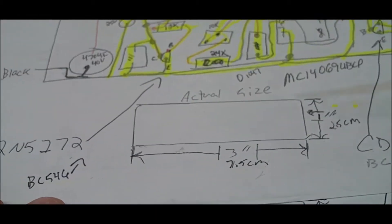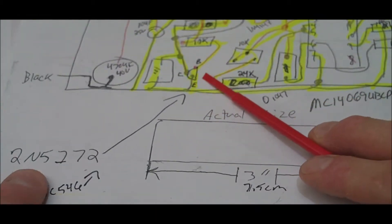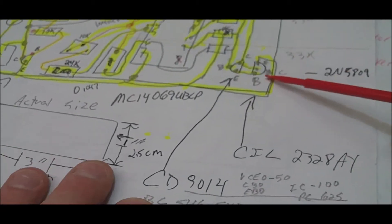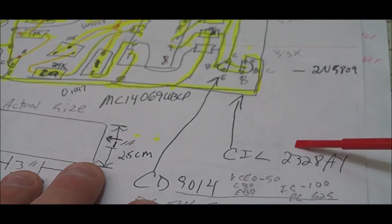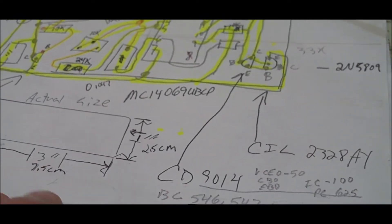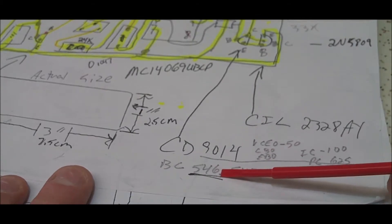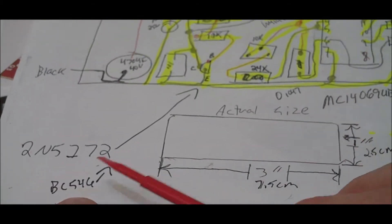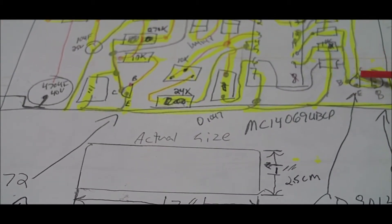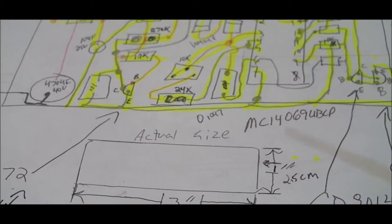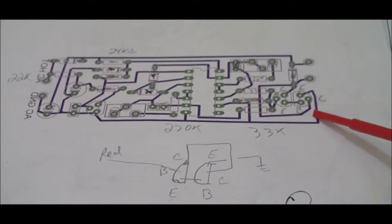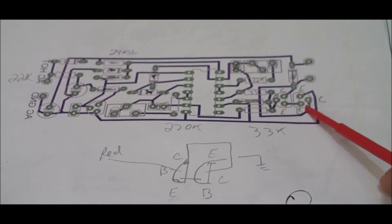If you're concerned about them, this transistor here is 2N5172, this one here had CD9014, and this one here had CIL2328AY. They were the factory board numbers. Now I ended up using a BC546 for this one and a BC546 for this one. Now just be aware that the BC546 pinout is different than these.